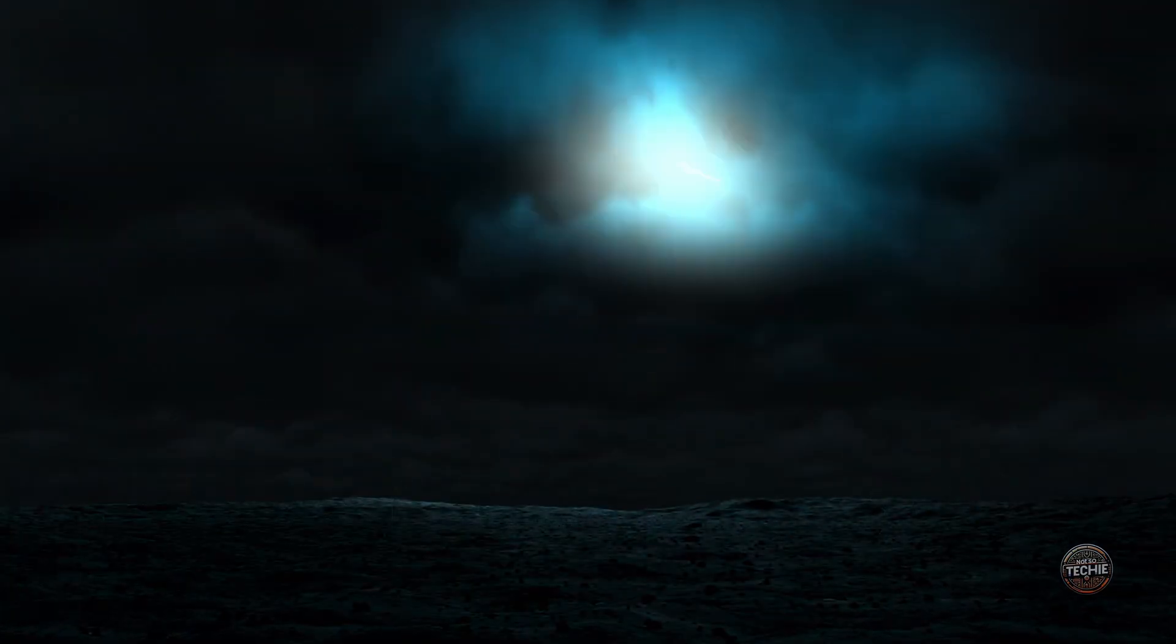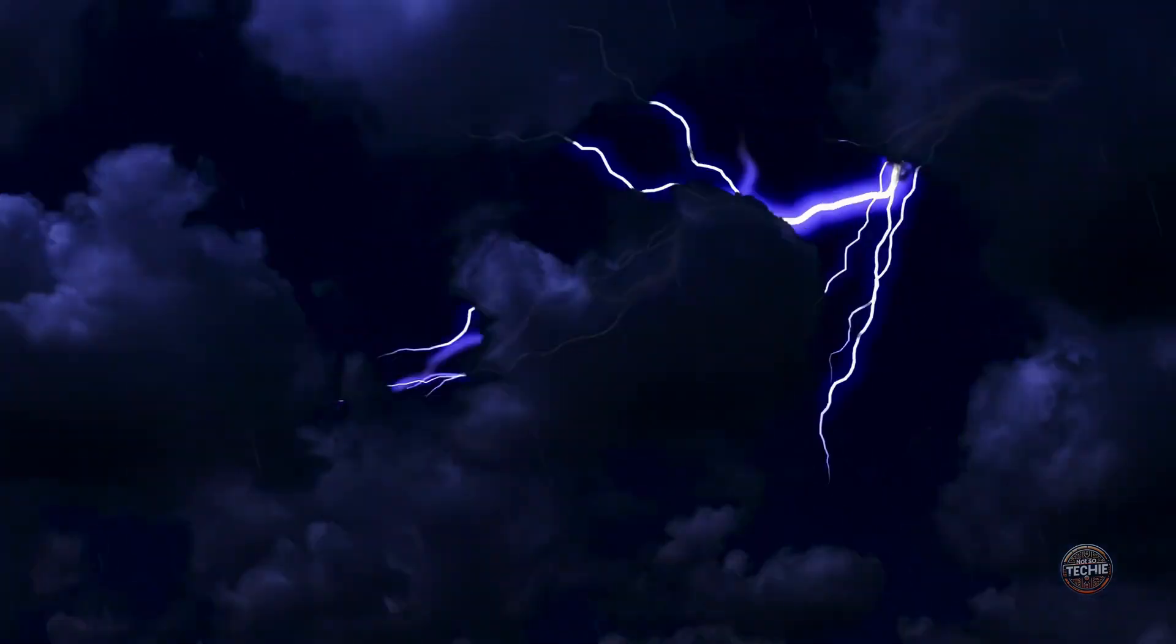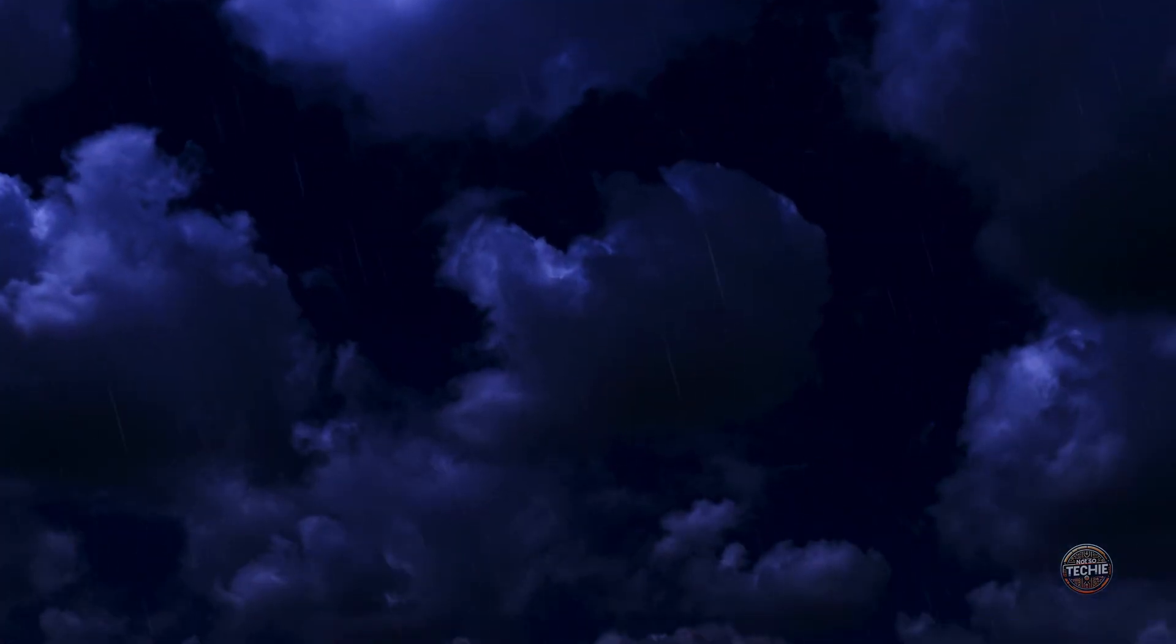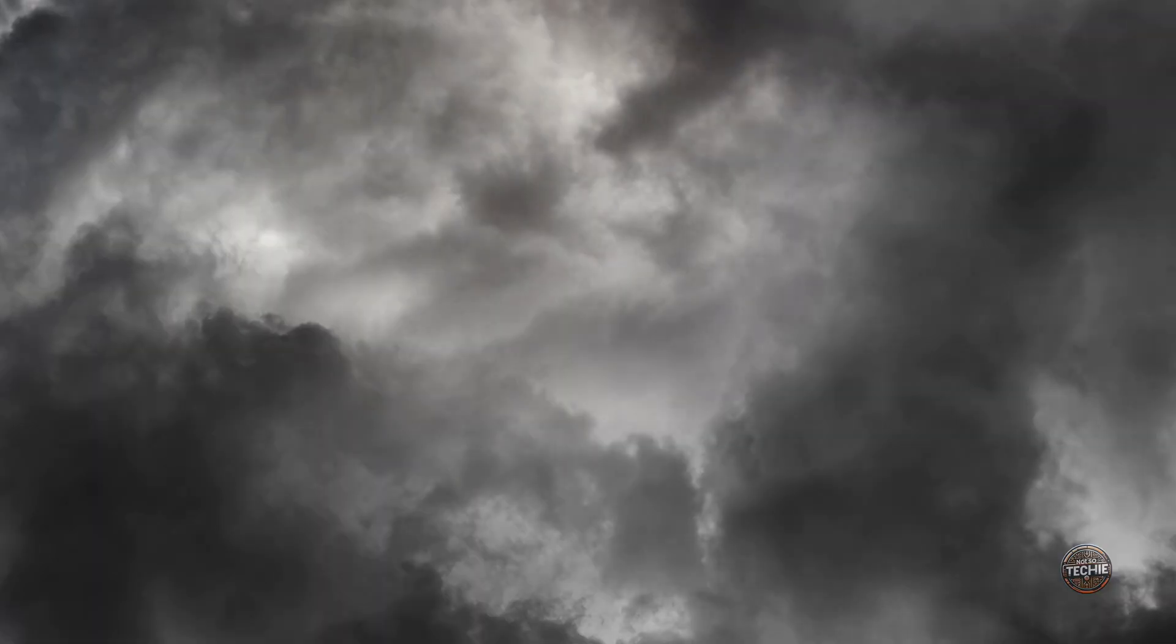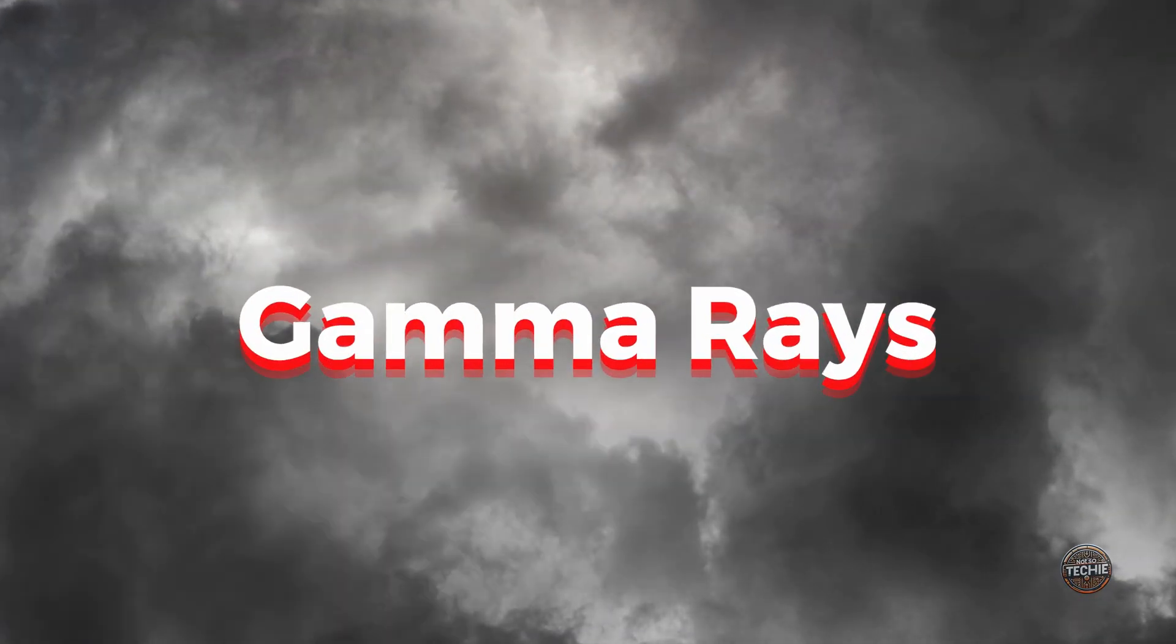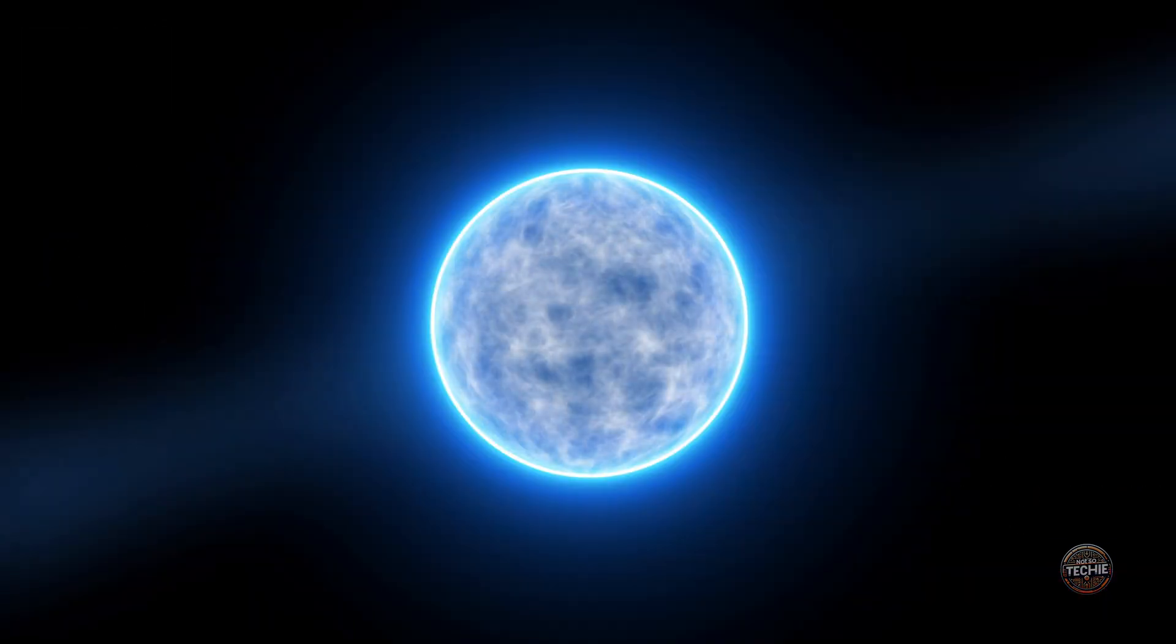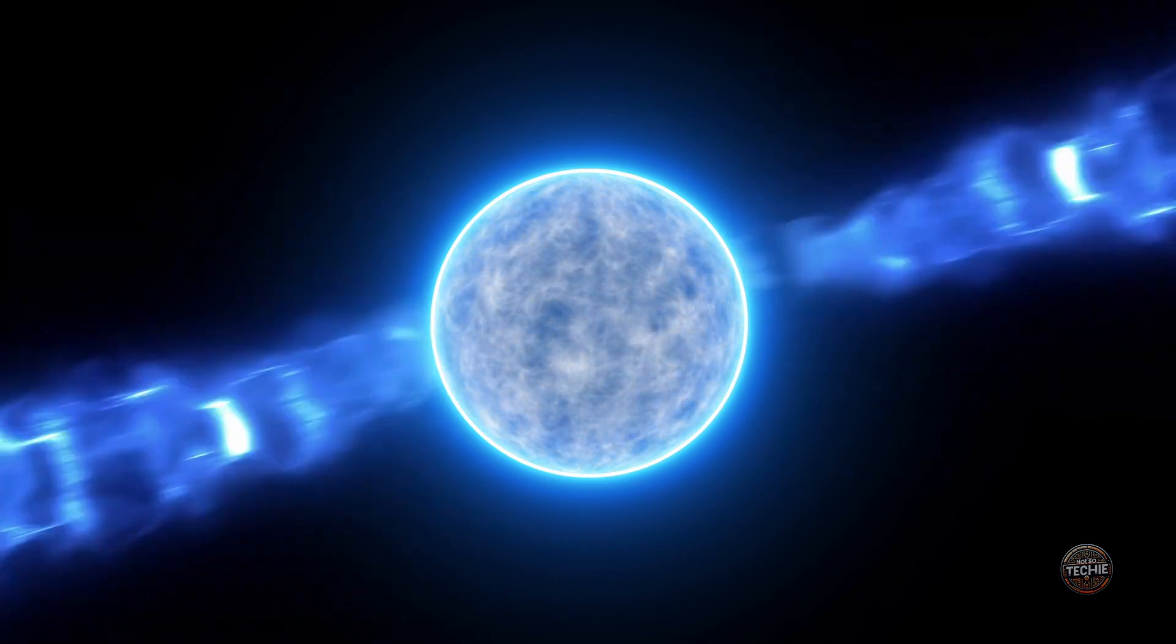Did you know thunderstorms are some of the most dramatic displays in nature. They bring with them flashes of lightning, deafening thunder, and torrential rain. But hidden within these storms is something far more extraordinary: gamma rays. These rays are the most energetic form of light in the universe, typically associated with black holes, neutron stars, and supernovae.